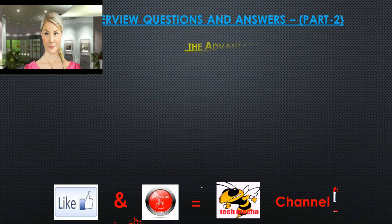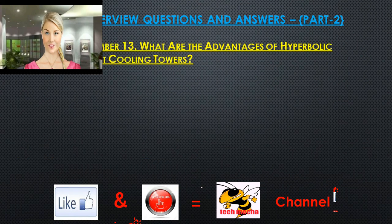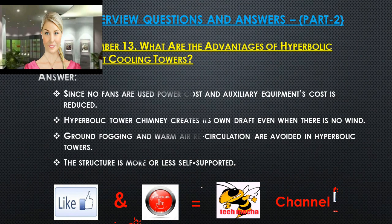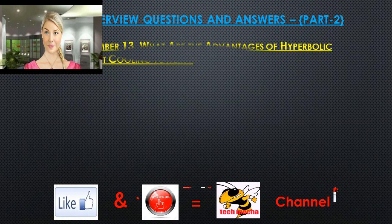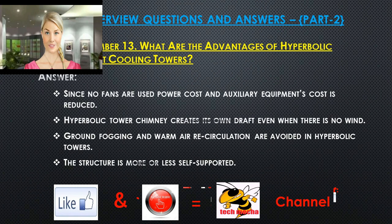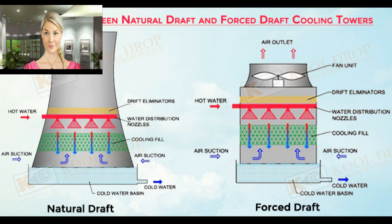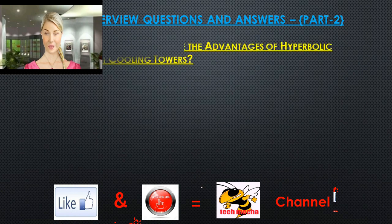Question 13: What are the advantages of hyperbolic natural draft cooling towers? Since no fans are used, power cost and auxiliary equipment costs are reduced. The hyperbolic tower chimney creates its own draft even when there is no wind. Ground fogging and warm air recirculation are avoided, and the structure is more or less self-supported.